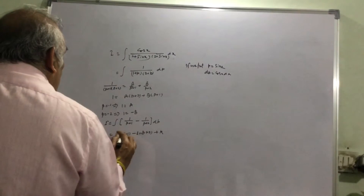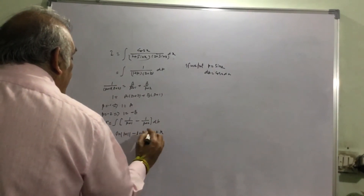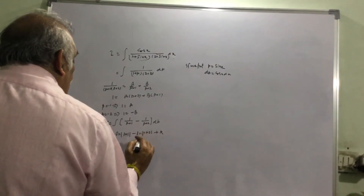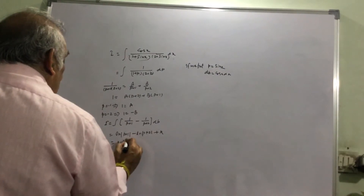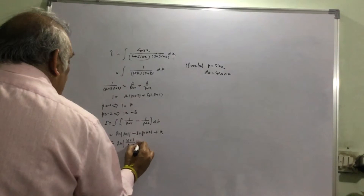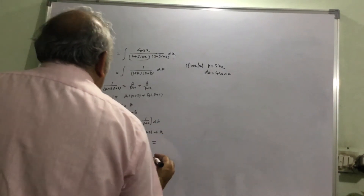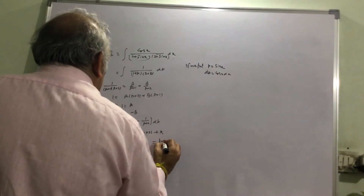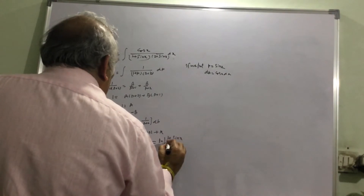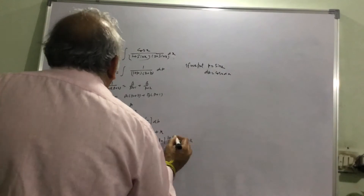These should be absolute values. So we can write this as log of the absolute value of (p plus 1) divided by (p plus 2) plus k. Now substituting sin x in place of p, we get log|(1 plus sin x) divided by (2 plus sin x)| plus k.